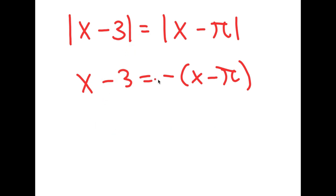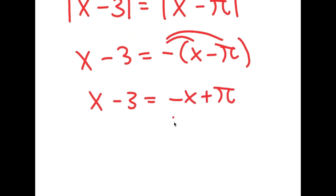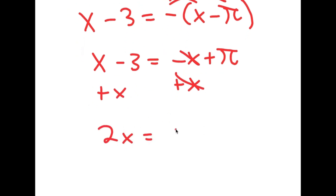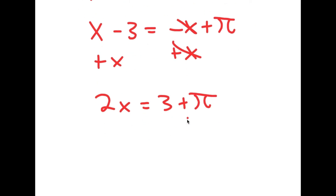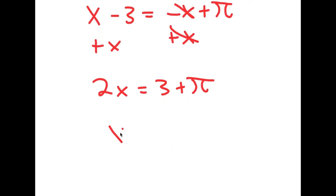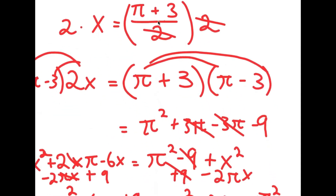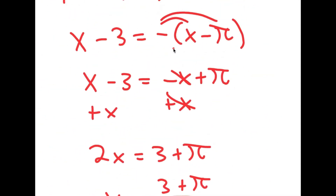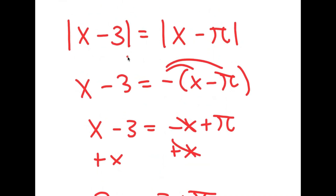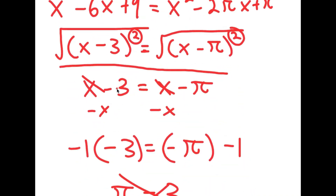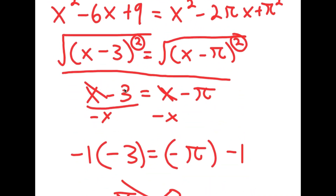If we solve x minus 3 equals negative(x minus pi), we distribute the negative sign to get x minus 3 equals negative x plus pi. Adding x to both sides, these cancel out and I get 2x equals 3 plus pi. So x equals 3 plus pi over 2 — which, going back, is exactly what we started with. So that's something really important to know: the square root of a square isn't just the normal value, it's the absolute value.